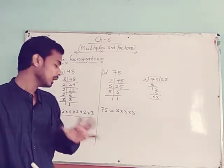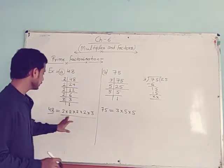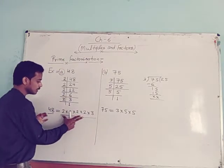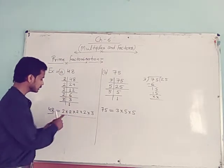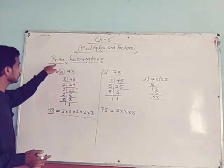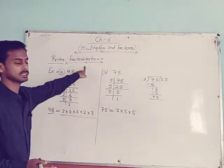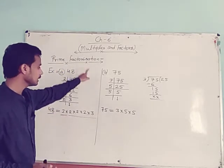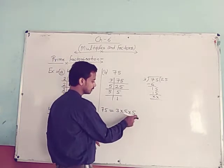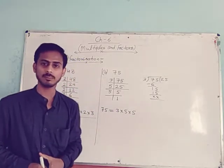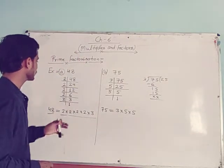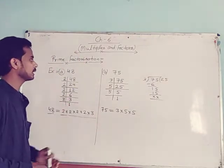You can observe that all the factors — 3, 5, 5 — are prime numbers. That is why this method is called prime factorization: all the resulting digits are prime numbers.